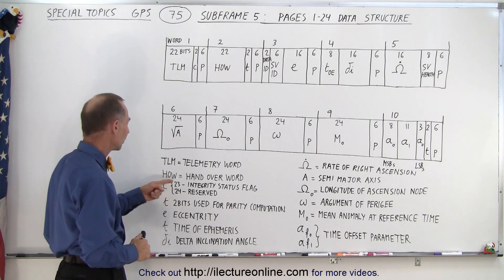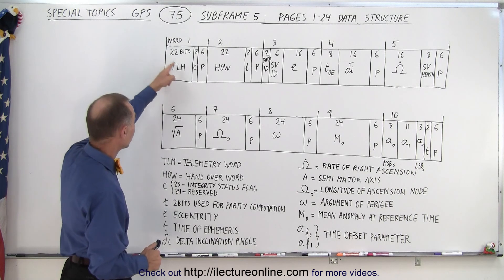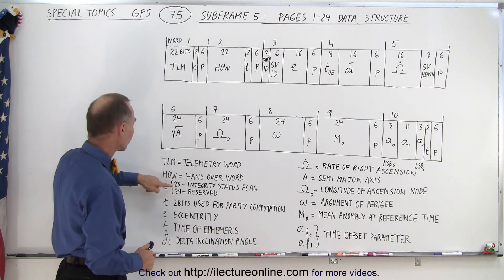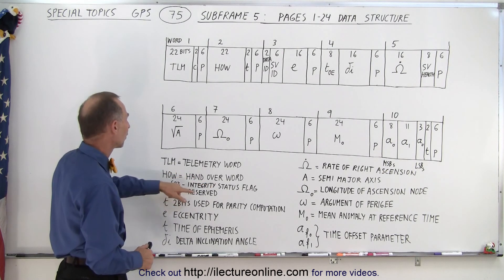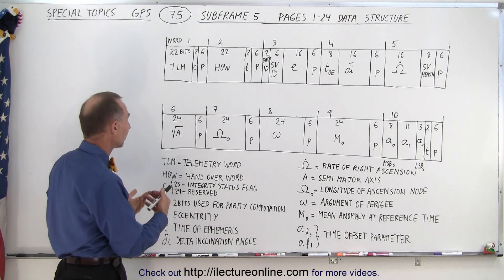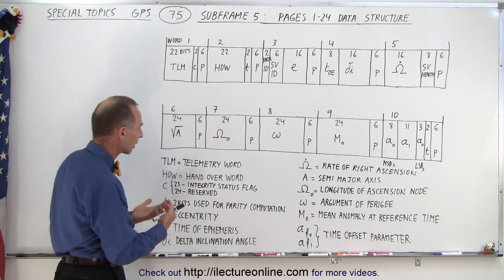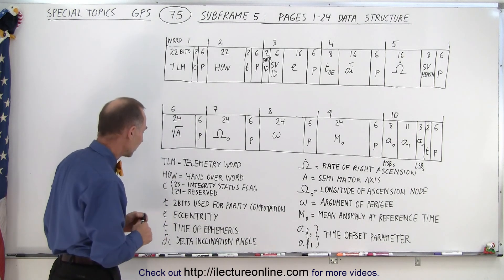C has two bits, bit 23 and 24. The first 22 bits are for the TLM. So 23 is what we call an integrity status flag and 24 is reserved. So 23 is simply a flag that tells you about the integrity status of that information.